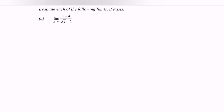First of all I'm going to substitute the value of x. If we substitute the value of x, we will have 4 minus 4, which gives us 0 in the numerator, over square root of 4, which gives us 2. Then 2 minus 2 gives us 0 as well. This is what we call indeterminate form.